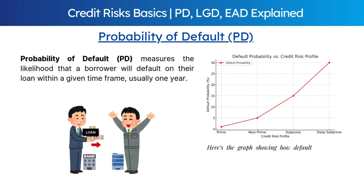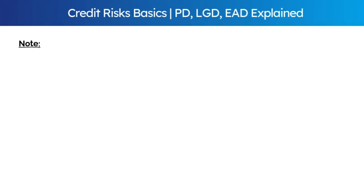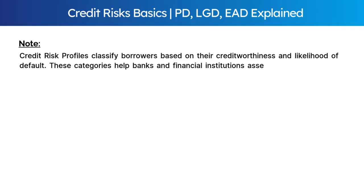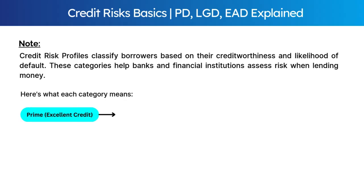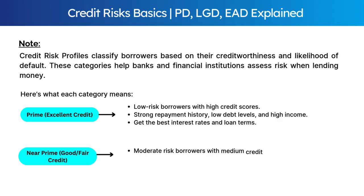Here's a graph showing how default probability increases as credit risk worsens. You can see a sharp rise from prime profiles to deep subprime profiles. Credit risk profiles classify borrowers based on their creditworthiness and likelihood of default. The first category is the prime category — it consists of low-risk borrowers with high credit scores, strong repayment history, low debt levels, and high income. They get the best interest rates and loan terms.